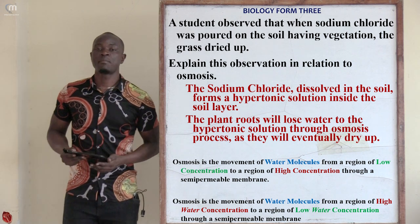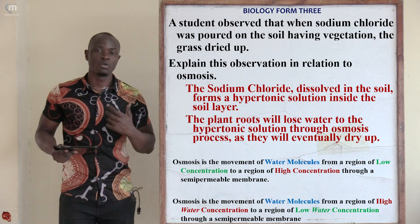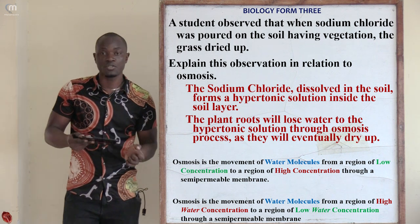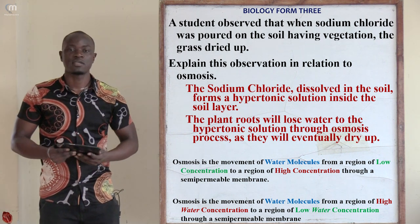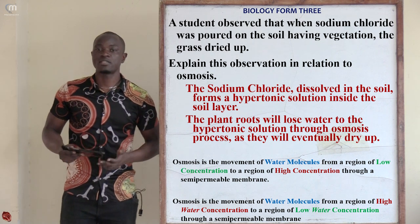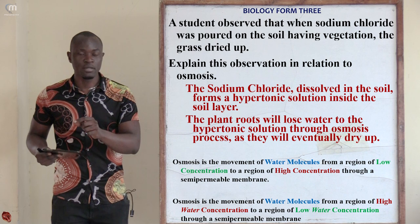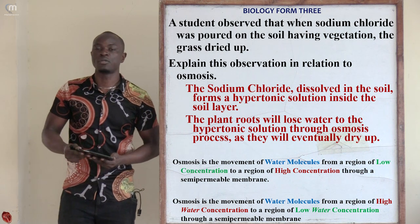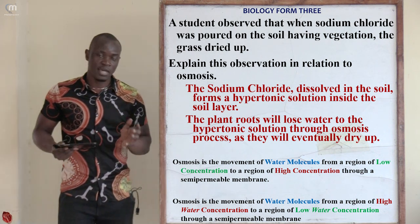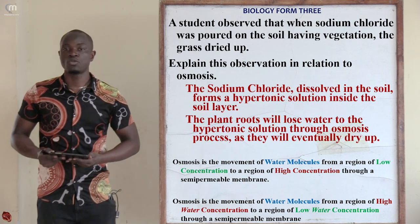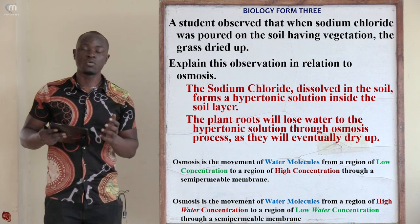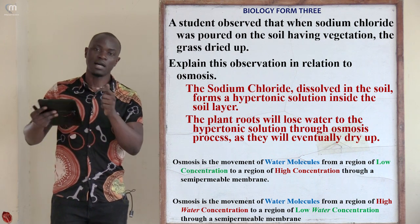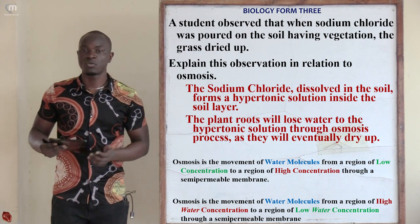Osmosis is the process whereby water molecules move from a region of low concentration to a region of high concentration. Alternatively, it is the movement of water molecules from a region of high water concentration to a region of low water concentration. So most of the water moved from inside the roots, where solute concentration was low, to the soil, where solute concentration was very high.